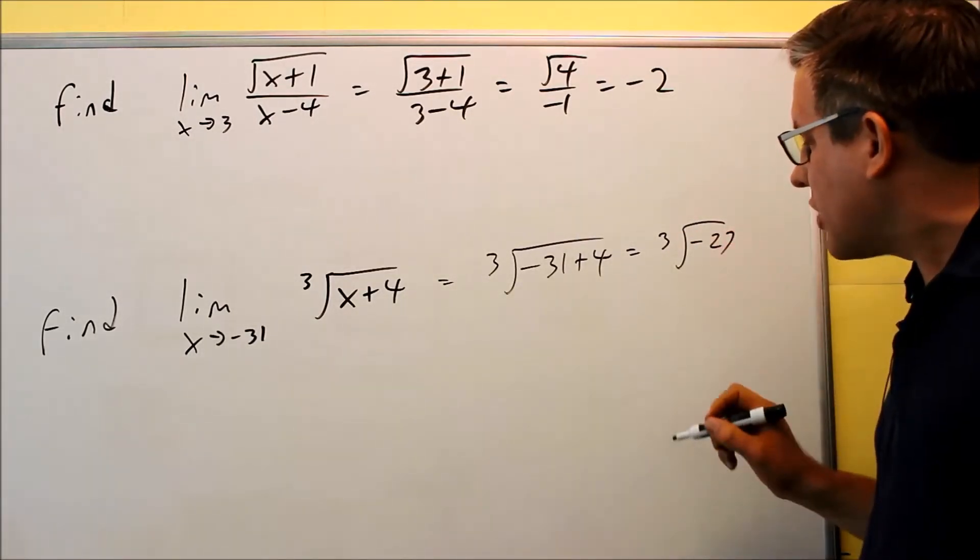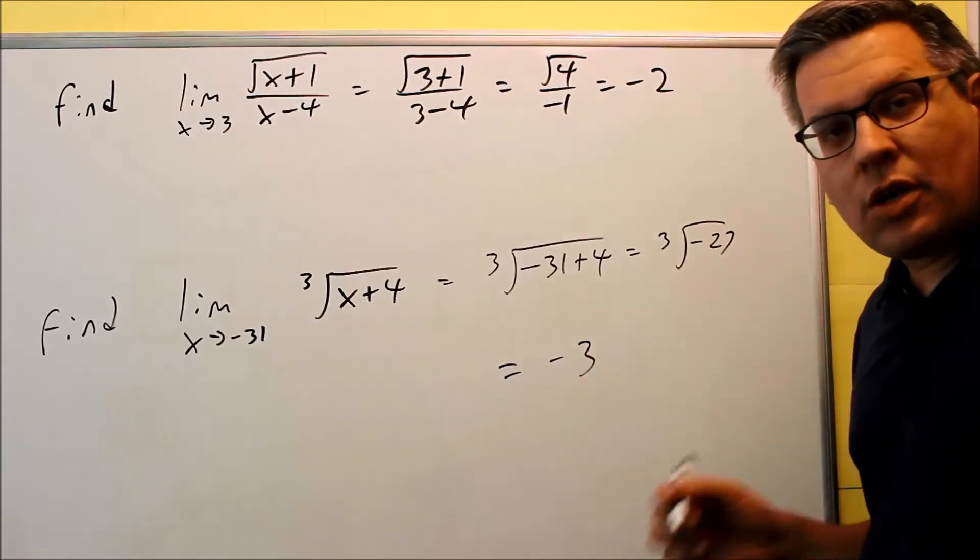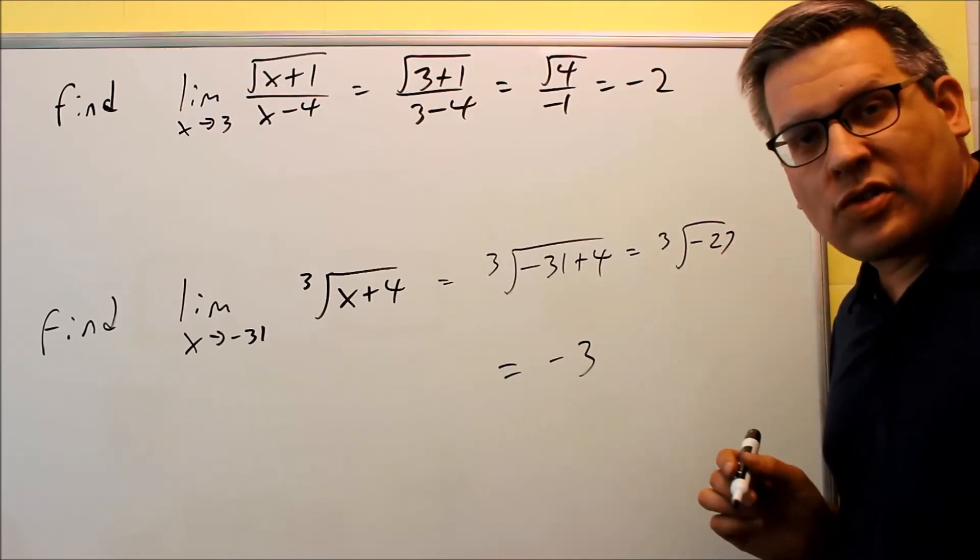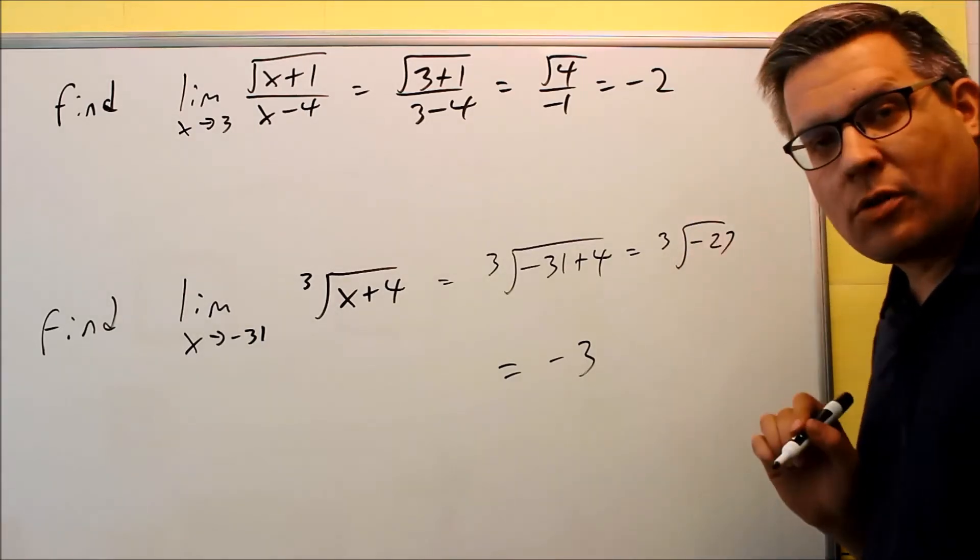The cube root of negative 27, you are able to do, and that's going to give you negative 3 because negative 3 times negative 3 times negative 3 would give you negative 27. So if you have an odd root, you are able to take the odd root of negative numbers.